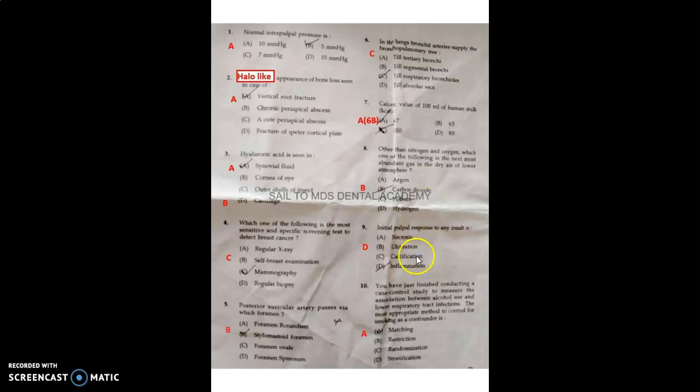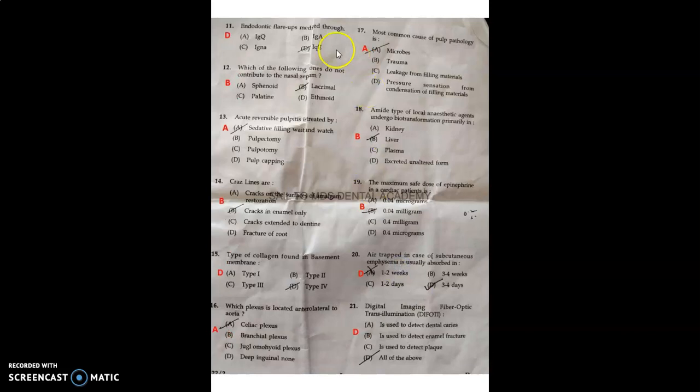In a case control study to measure association between alcohol and lower respiratory infection, the most appropriate method to control for smoking as a confounder is matching. Endodontic flare-up is mediated through IgE. The bone that does not contribute to nasal septum is the lacrimal. Acute reversal of body is treated by serenity filling and wait and watch. Craze lines are cracks in enamel only. Type of collagen found in basal membrane is type 4. The plexus located anterolateral to aorta is the celiac plexus. Most common cause of pulp pathology is microbes. Amide type local anesthetic is metabolized in liver. Maximum safe dose for epinephrine in cardiac patients is 0.04mg. Air trapped in case of emphysema is usually absorbed in 3-4 days. DIAGNOdent is used to detect caries, fracture, and plaque.